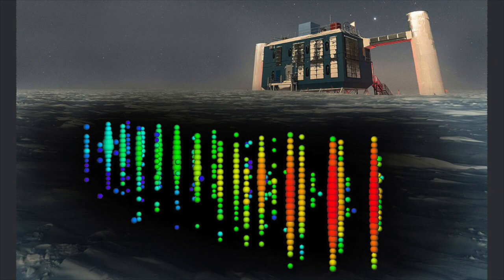IceCube had previously detected very high energy neutrinos coming from outside the Milky Way. But it's been more of a challenge to pick out lower energy neutrinos that began their journeys from within our galaxy.